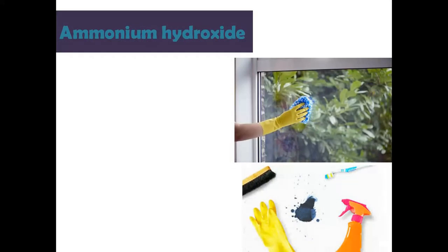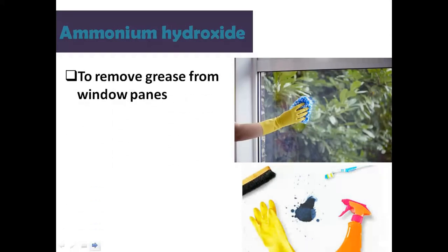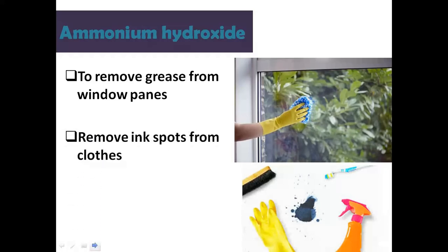The next alkali is ammonium hydroxide. Ammonium hydroxide کا پہلا use یہ ہے کہ یہ grease اور oil کو remove کرتا ہے۔ ہم اسے اپنے glass وغیرہ صاف کرنے کے لیے استعمال کرتے ہیں۔ Next use: to remove ink spots from clothes. ہمارے fabric کے اوپر اگر کوئی ink spot گر جاتا ہے تو اسے remove کرنے کے لیے بھی ammonium hydroxide استعمال کیا جاتا ہے۔